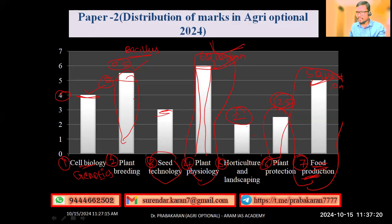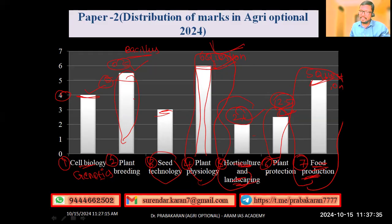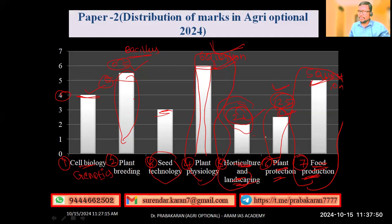In Paper 2, very few questions were asked from horticulture and plant protection. Many agri-optional students worry about horticulture because of the extensive package of practices, and about plant production due to the many pests and diseases to cover. However, only two or 2.5 questions were asked from these areas, so you can get a rough idea of which subjects were given more importance compared to others.